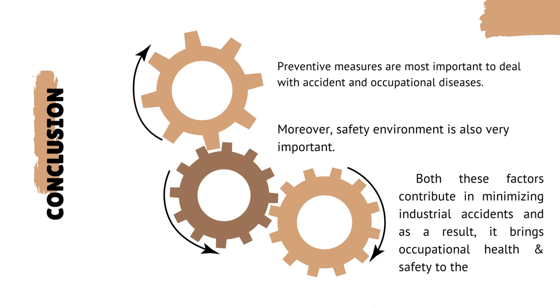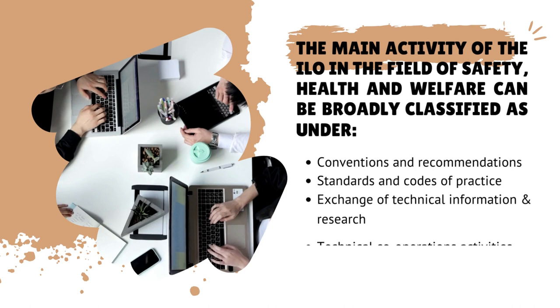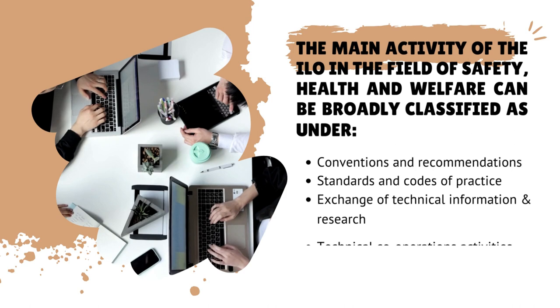In conclusion, preventive measures are most important to deal with accidents and occupational diseases. Moreover, a safe environment is also very important. Both these factors contribute to minimizing industrial accidents, and as a result, bring occupational health and safety to the workers, which is the prime motto of ILO. So this was all about ILO — International Labour Organization — where we discussed the history of ILO, the main activities in the field of safety, health and welfare, and important convention recommendations.